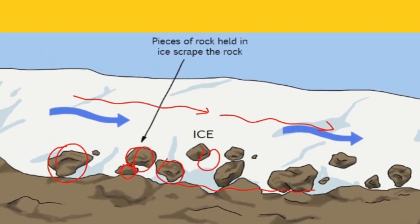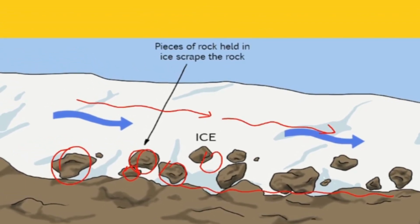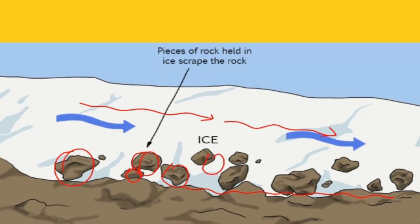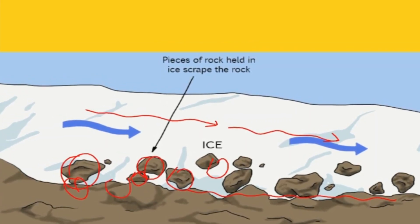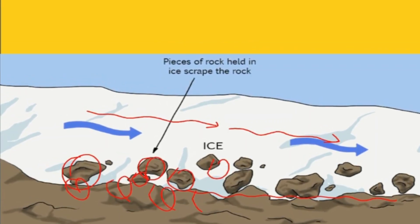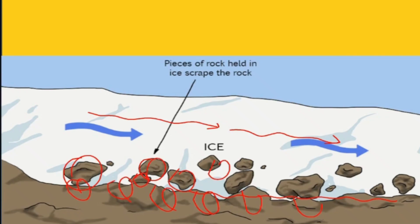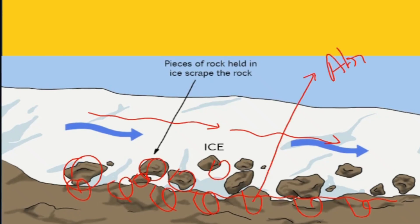When glacier-carried rock particles move along the rock surface, they erode the bed through friction. This erosion taking place is again known as abrasion, or corrosion.